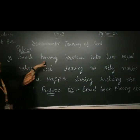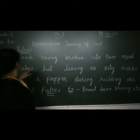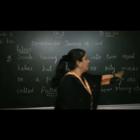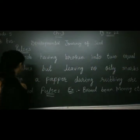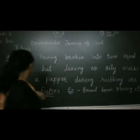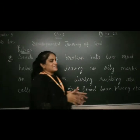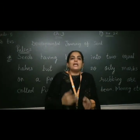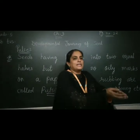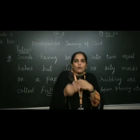Pulses: seeds having broken into 2 equal halves but leaving no oily marks on a paper during rubbing are called pulses. It means these are seeds that are pulses. But how will you know which seeds belong to pulses, which belong to cereals, and which are oil seeds?